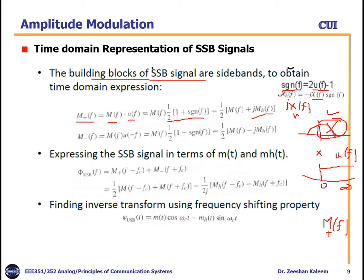Similarly, M−(f) represents the negative (lower) frequency part: multiply by U(−f), giving M(f)·U(−f) = (1/2)[1 − sgn(f)]·M(f) = (1/2)[M(f) − j·M_H(f)]. Using the Hilbert transform property with j, j·j = j² = −1, so −(−1) gives the positive sign, confirming M(f)·sgn(f) = j·M_H(f), and M−(f) = (1/2)[M(f) − j·M_H(f)].